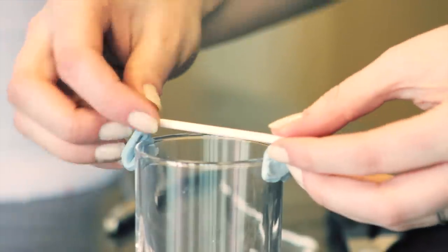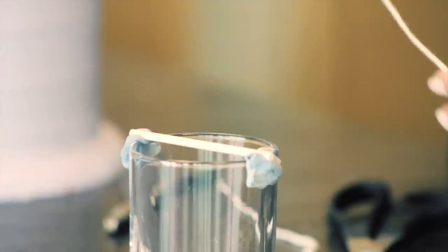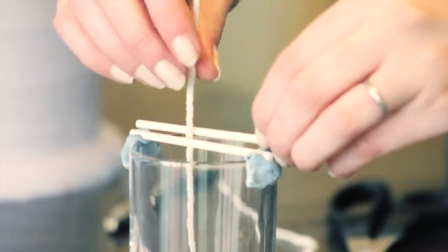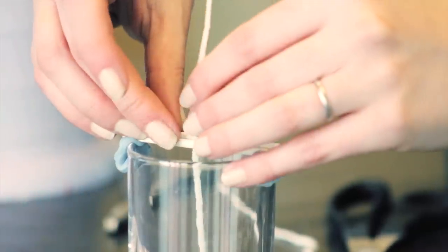Position one wick rod roughly in the center. Insert your wick and position another wick rod on the other side of the wick to hold it in place.